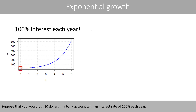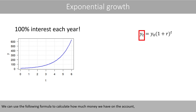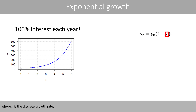Suppose that you put $10 in a bank account with an interest rate of 100% each year. This means that you will have $20 after one year, $40 after two years, $80 after three years, $160, $320, $640, and so forth. We can use the following formula to calculate how much money we have in the account after a certain number of years, where R is the discrete growth rate. Since the interest rate is 100% per year in our example, we set R to 1.